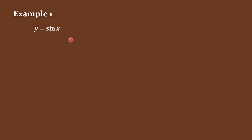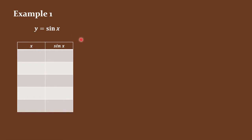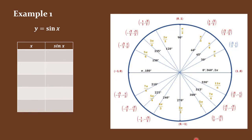Let's start first with the parent graph sine x. Let us use a table of values to show the coordinates. X would be the angles and y would be the value of the sine of the given angle. In reference to our unit circle, starting with 0 radians, the sine is the y-coordinate. So sine of 0 is 0, pi over 2 is 1, pi is 0, 3 pi over 2 is negative 1, and 2 pi is 0.